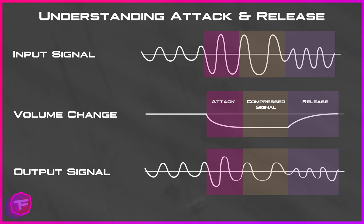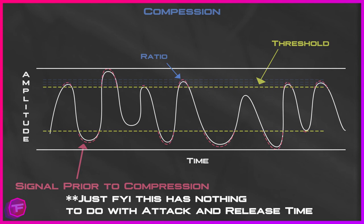Once that audio signal goes back through the threshold, the release time activates — how quickly that audio signal returns to a normal state is the release time. In the output signal, you see the signal traveling through: once compression is engaged the attack time begins to compress the audio down to the ratio you've set. In the yellow you have the compressed audio signal, and then once the signal goes back through the threshold the release time engages and the audio slowly returns to normal.